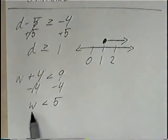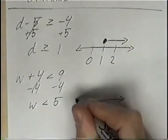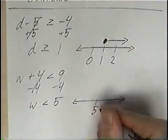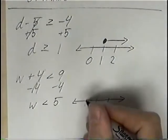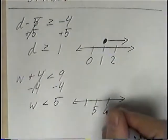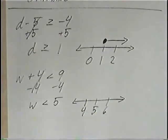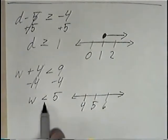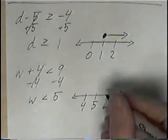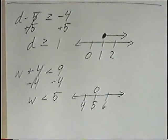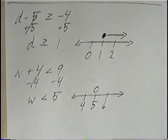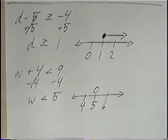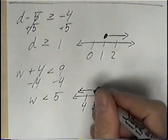The answer to the inequality is W is less than 5. Drawing a number line, we put 5 in the middle, with one number on the left and one on the right — 6 on the right and 4 on the left. W is less than 5, and there is no line on the bottom, meaning it is not equal to, so that means it is an open circle. W less than 5 means we want the numbers smaller than 5, which go to the left. That would be the graph for the inequality.